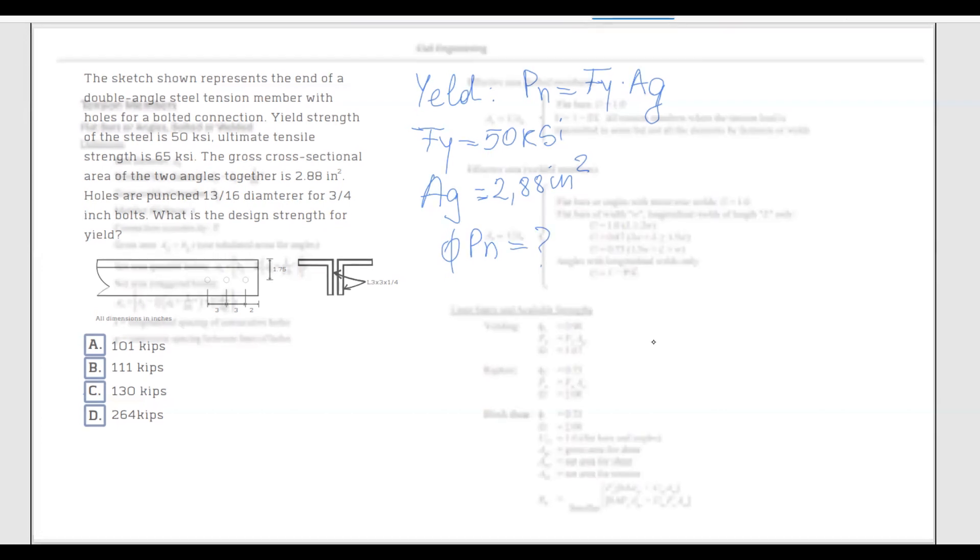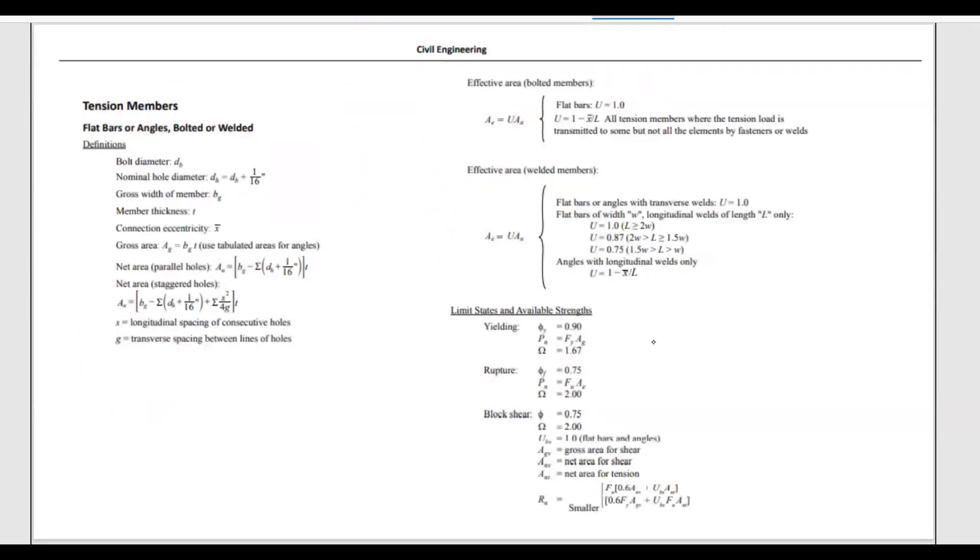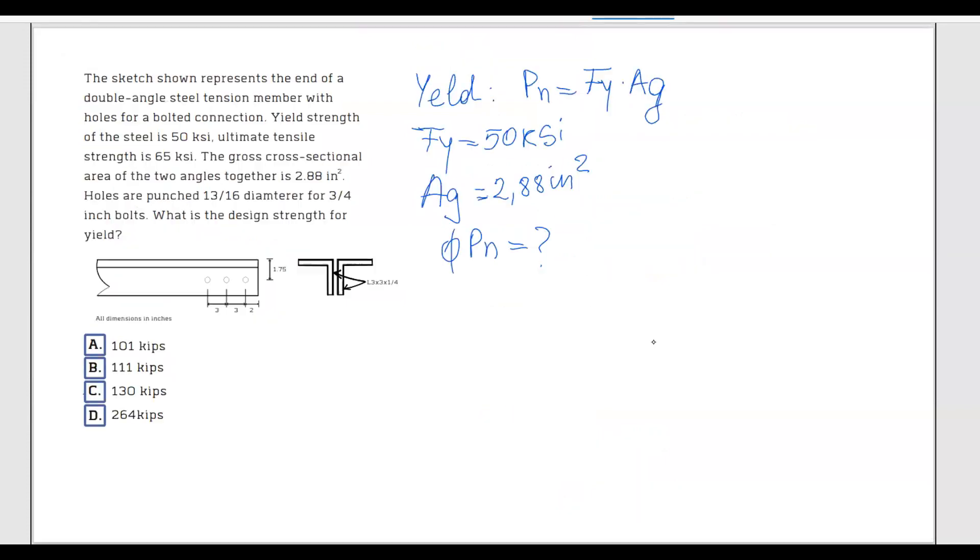Based on the FE handbook, Phi is given under yielding as 0.9. So now we can calculate Phi Pn, the design strength for yield, which equals 0.9 multiplied by Fy.